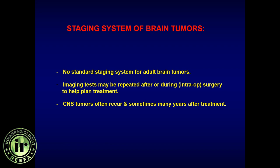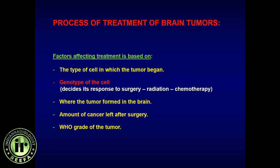Because of this CNS confinement, we generally don't need to do a whole-body PET scan or look for distant metastases from brain tumors. The factors we take into account for treatment are the histological grade one through four classification and the genotype of the tumor cell.